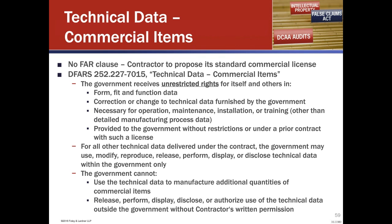When you have technical data pertaining to a commercial item, the government may not use that to manufacture additional quantities of the commercial item. They may not release it outside of the government without the contractor's consent — very similar to the limited rights license. Under the FAR, you can give the government your standard commercial license.